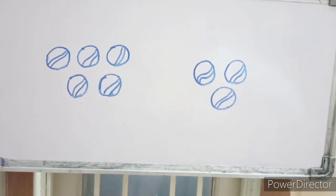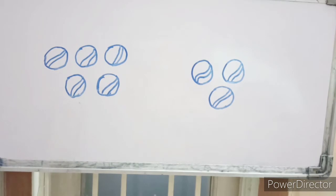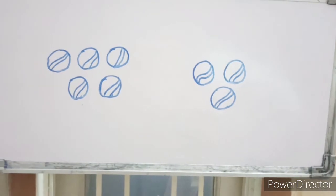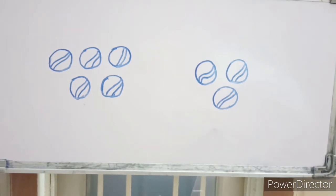So — many and few. When the number of balls is more, you say many balls. When the number of balls is less, you say few balls. Understood? Many means more, few means less. Yes!